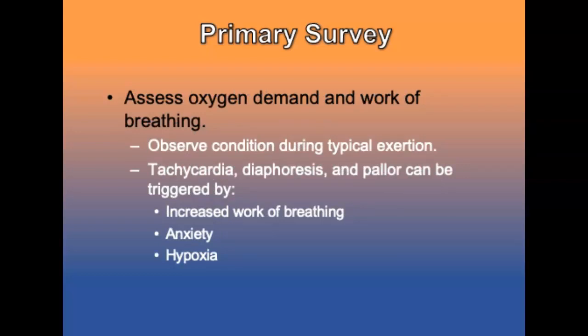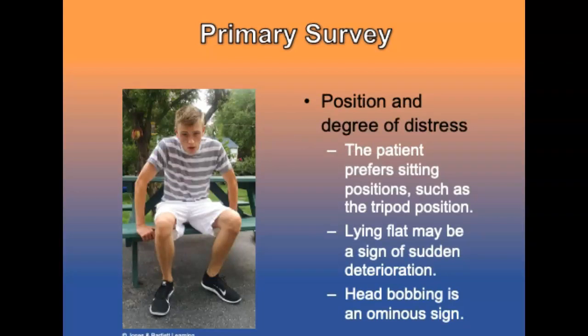Assess oxygen demand and work of breathing. Note oxygen saturation at rest and during simple exertion. Increased work of breathing, anxiety, hypoxia, or fever can trigger tachycardia, diaphoresis, and pallor. Note the patient's position and determine the degree of distress. Patients in respiratory distress prefer sitting positions — the tripod position, leaning forward and rotating the scapula outward. A patient who is willing to lay flat might indicate deterioration. A fatigued patient with severe respiratory disease may present with head bobbing, which is an ominous sign of immediate decompensation and often a preterminal behavior.